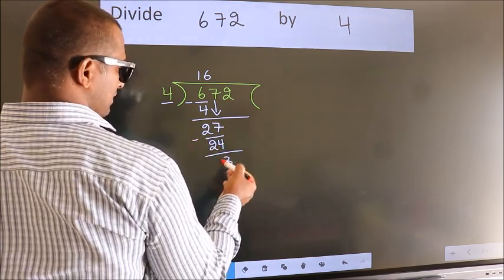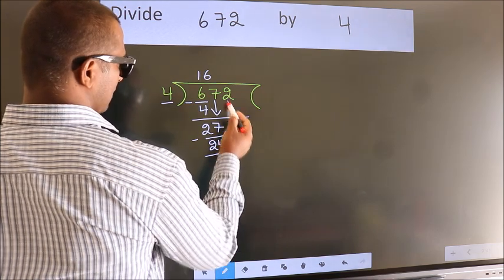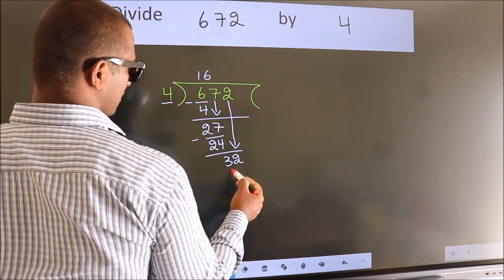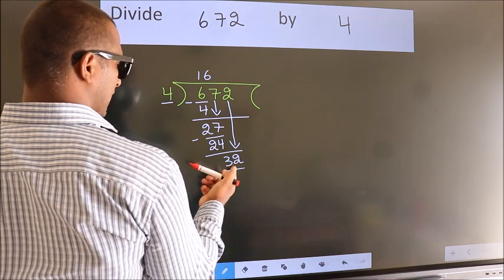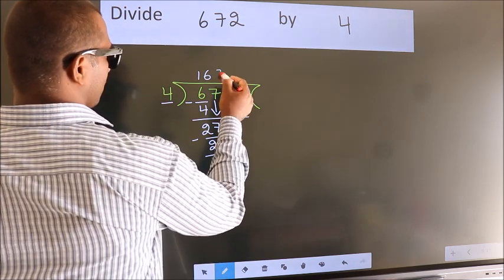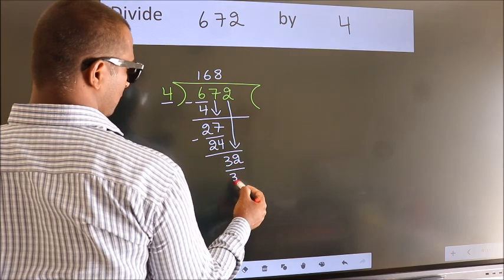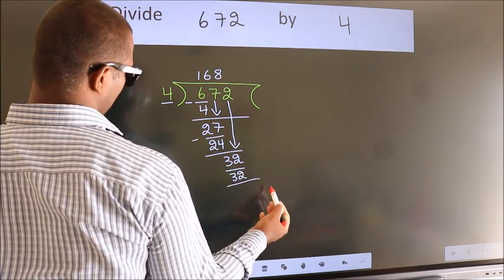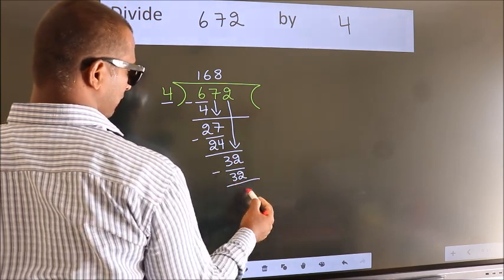After this, bring down the beside number. So, 2 down. So, 32. When do we get 32? In 4 table, 4 8s, 32. Now, we subtract. We get 0.